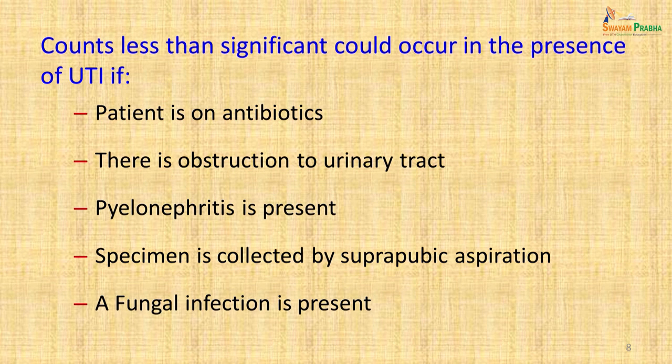Lower counts can still be significant in the presence of UTI if the patient is on antibiotics, there is obstruction to the urinary tract, pyelonephritis is present, specimen is collected by suprapubic aspiration, or a fungal infection is present — in these cases the same criteria do not apply.